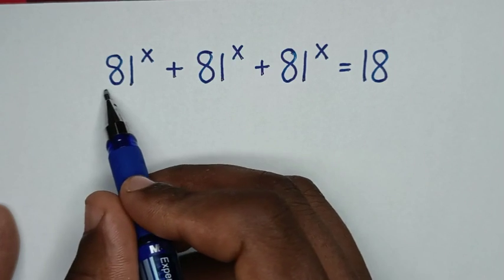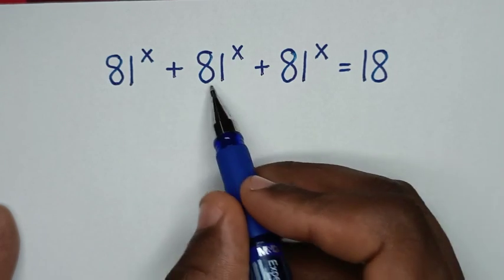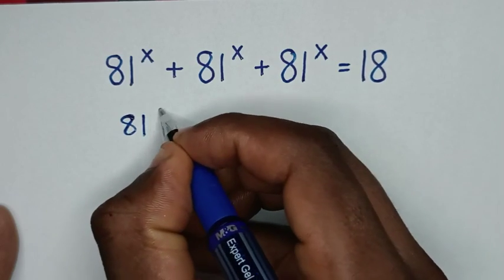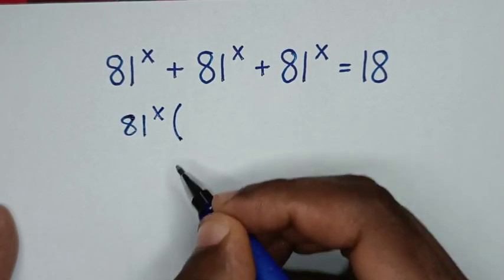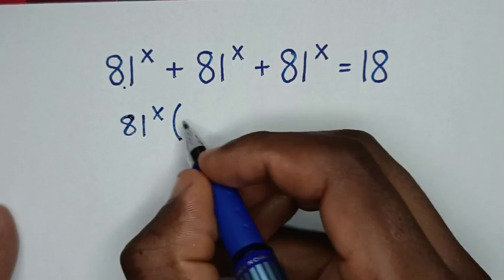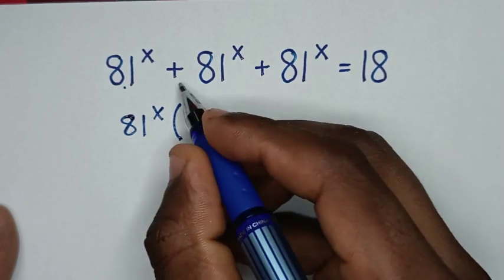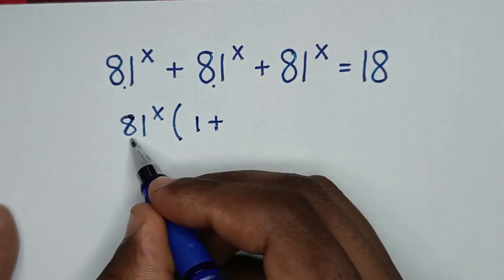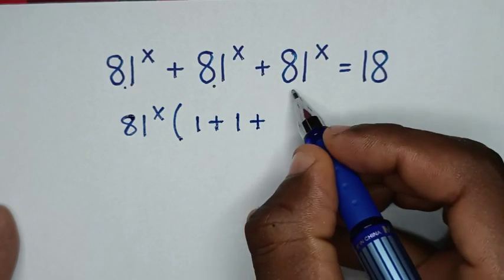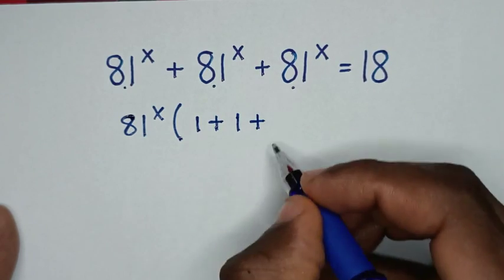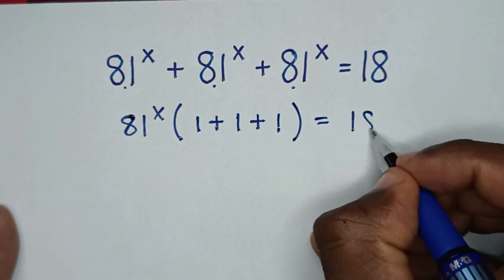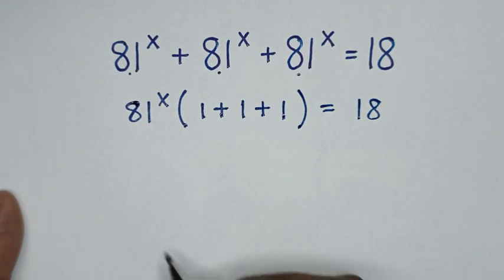In the first step, on the left side, 81 power of x is common, so we'll take 81 power of x out of the bracket. Then 81^x divided by 81^x is 1, plus 81^x divided by 81^x is 1, plus 81^x divided by 81^x is 1, all in the bracket, equal to 18.